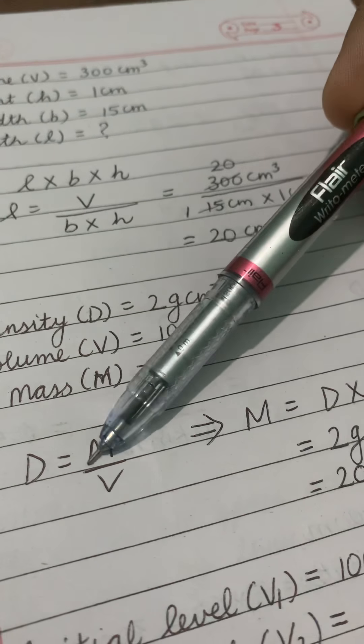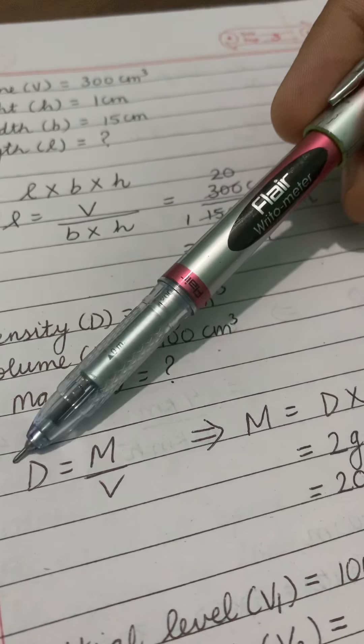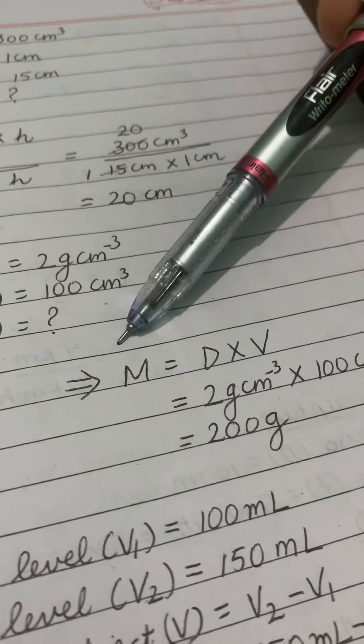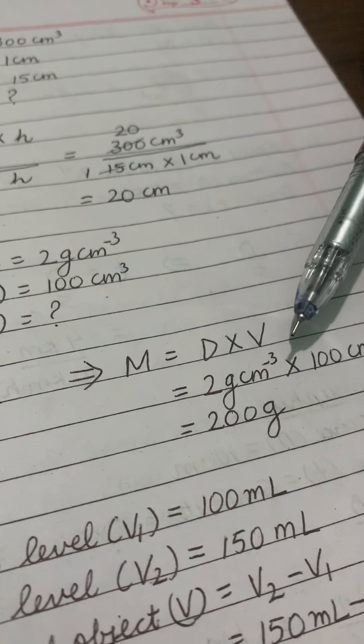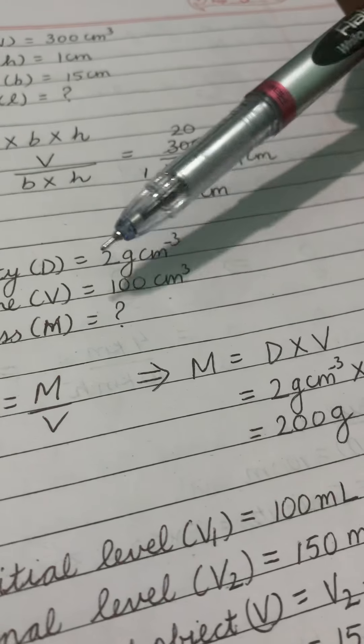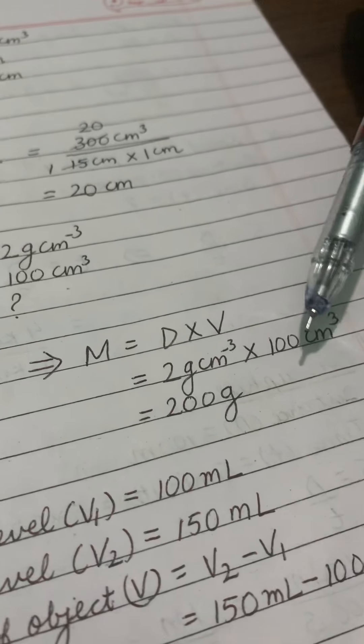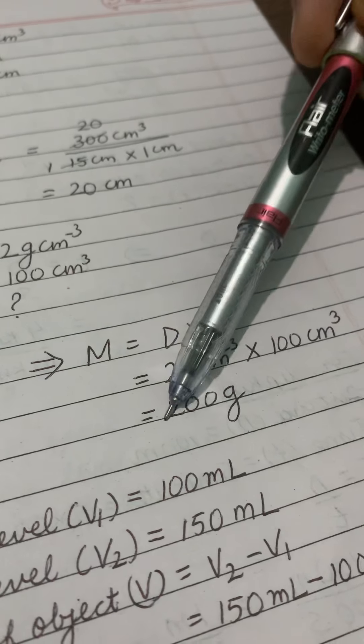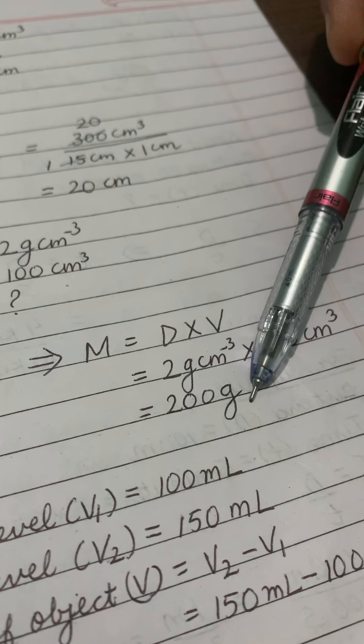If I have to find mass, volume is divided here. So it will get multiplied here. See mass is equals to density multiplied by volume. Substitute the value of density. Substitute the value of volume. 2 into 100 you will get 200 gram. Is your answer.